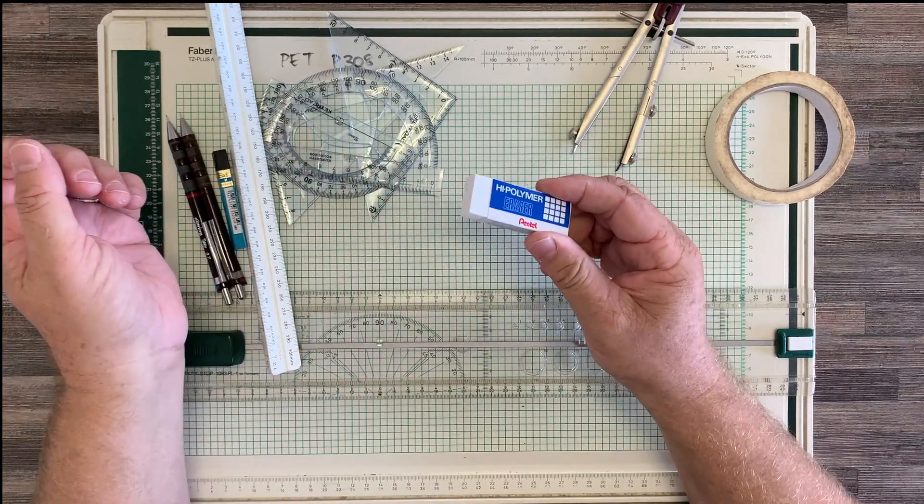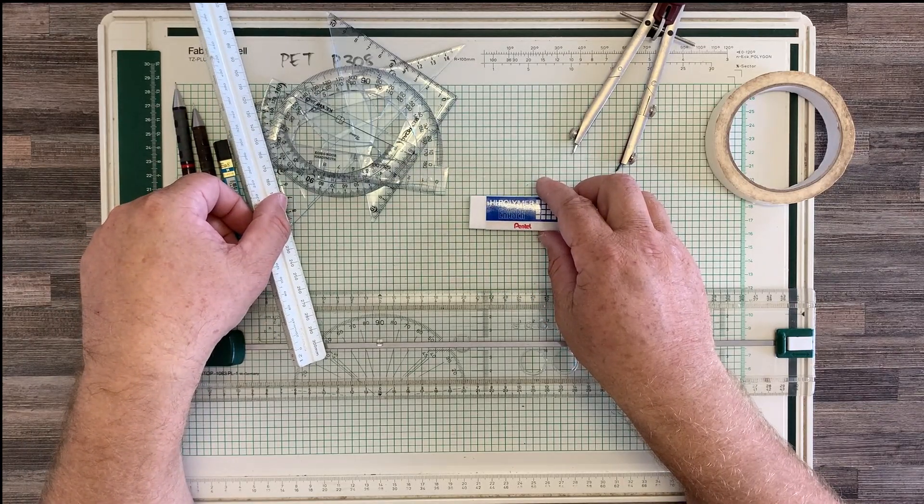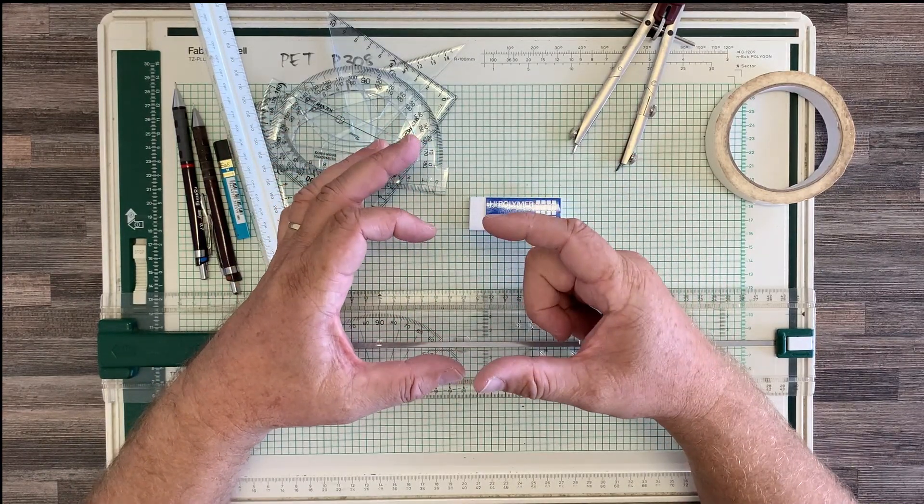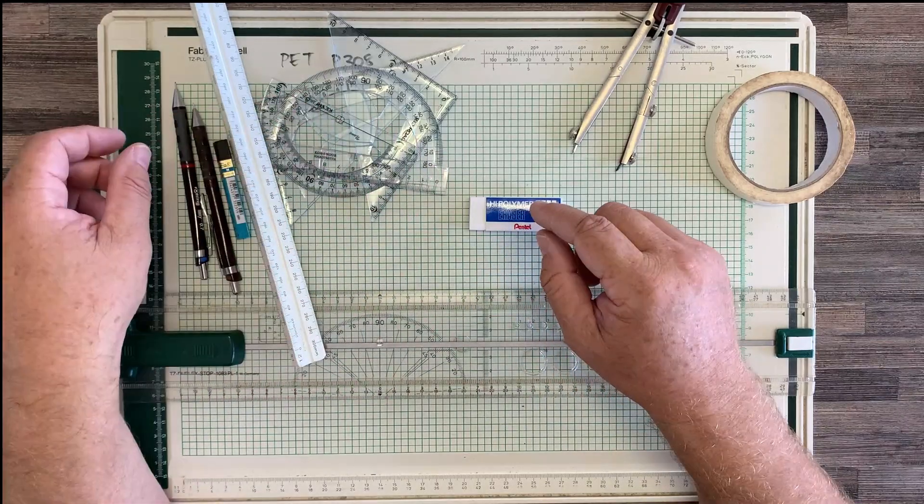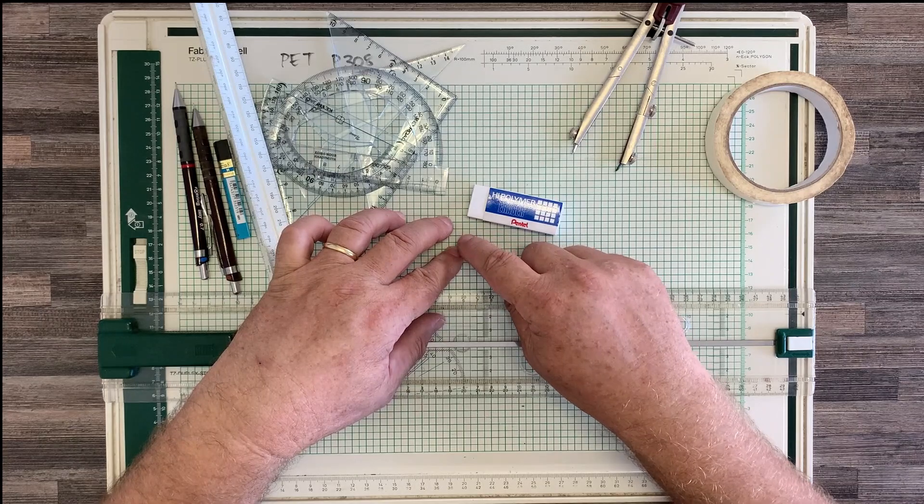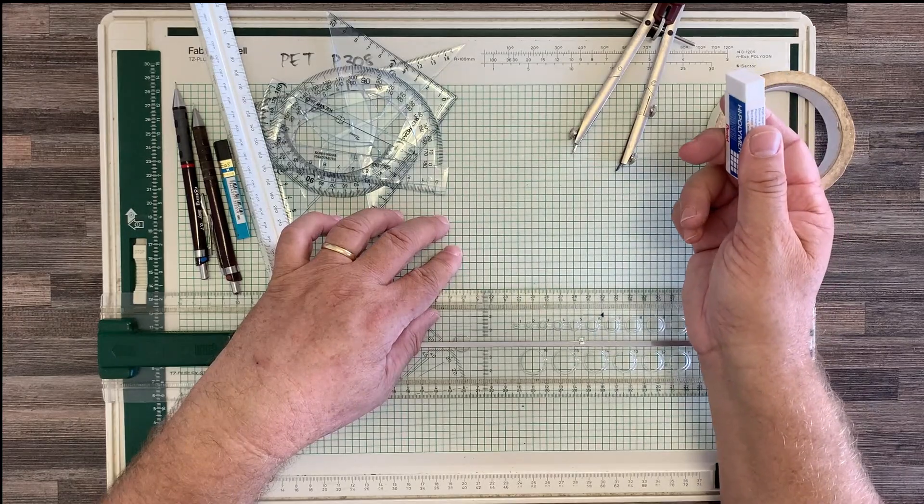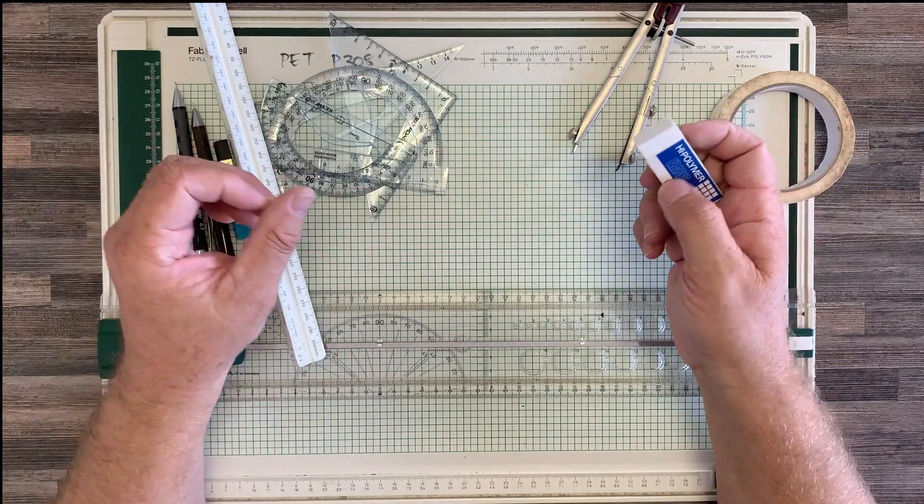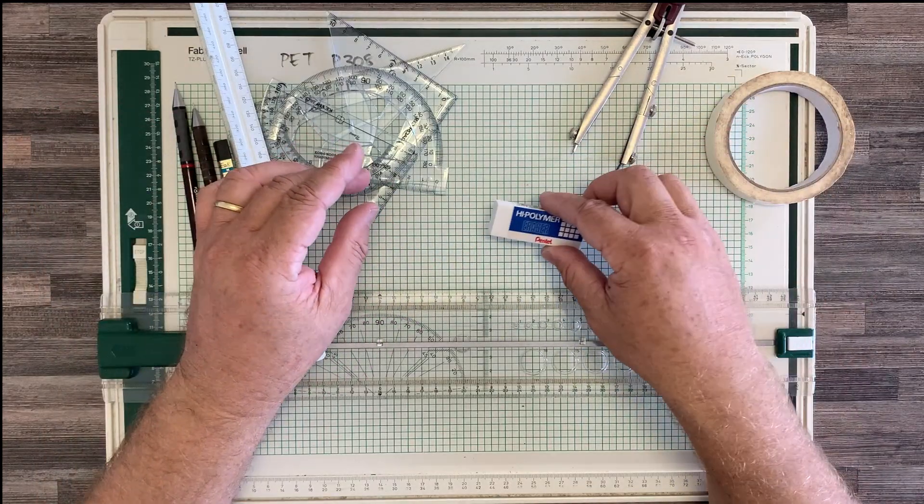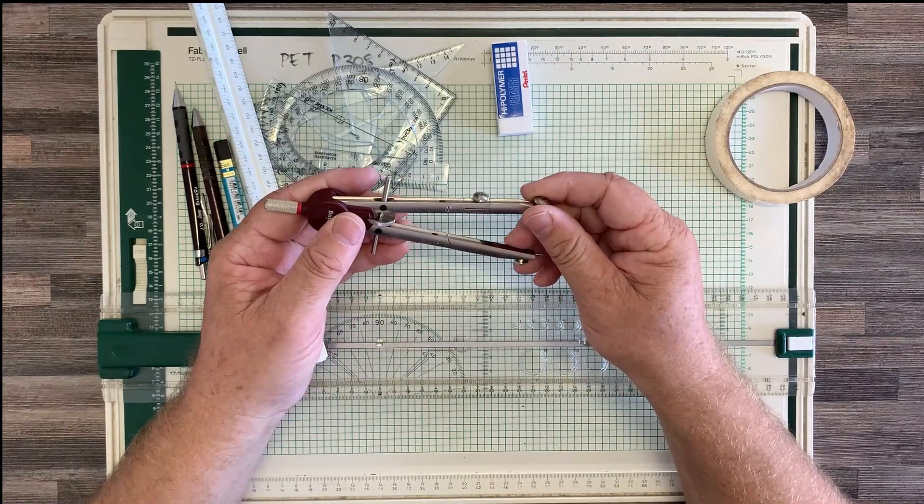The other thing I don't have here is an erasing shield, which is a very thin small piece of metal with various holes in it, and you put that over your mistake with only that little part sticking out through the hole that you want to erase. And then you use your eraser to go and erase in that hole so that stops you from smudging over your whole drawing. So that's quite useful. I just don't have one with me.